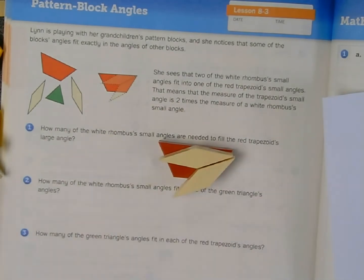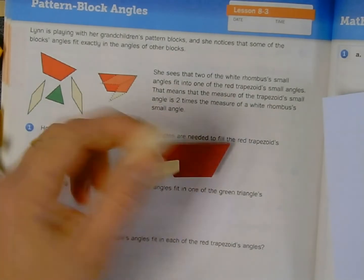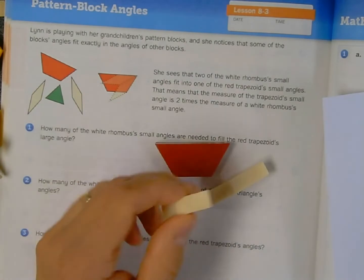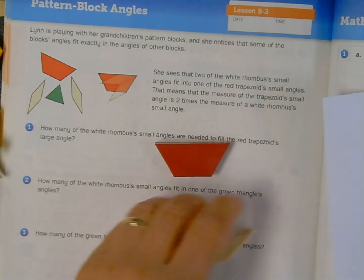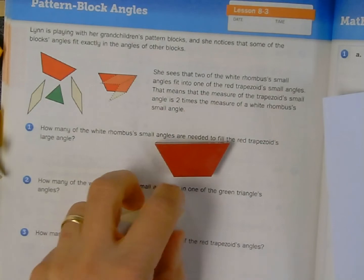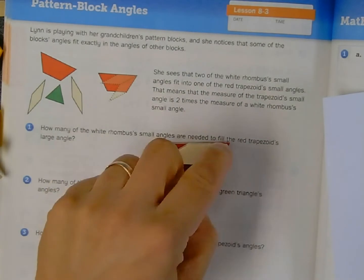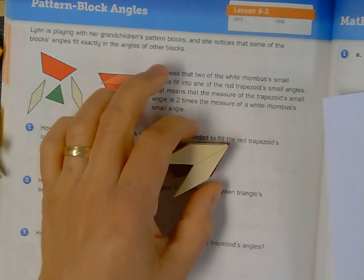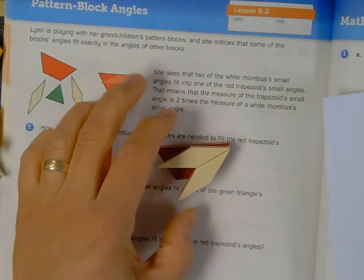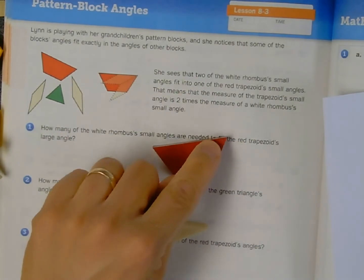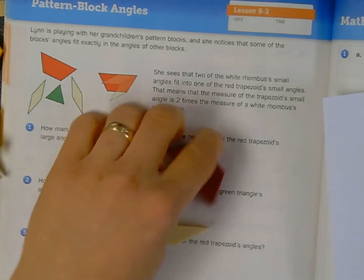So as you can see, as I lay these out, these rhombuses, rhombi, what's the plural? When I pair them together by their vertices, I can fit them into the space of the angle right here, of the acute angles of this trapezoid.